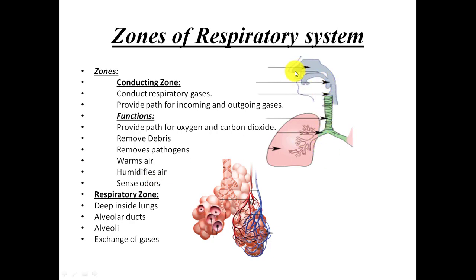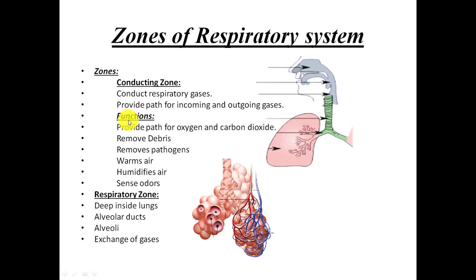From the nasal cavity, gas goes to the pharynx, then to the larynx, then the trachea, bronchi, bronchioles, and finally up to the alveoli. All these parts are the conducting zones — they conduct the respiratory gases, carrying oxygen in and bringing carbon dioxide back out, providing a path for incoming and outgoing gases.